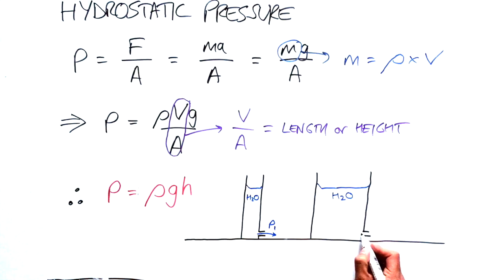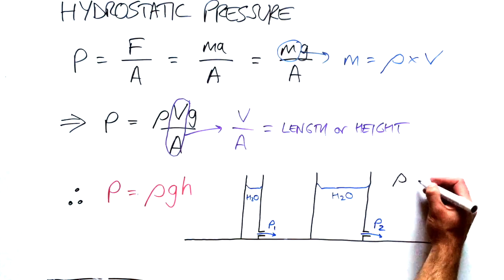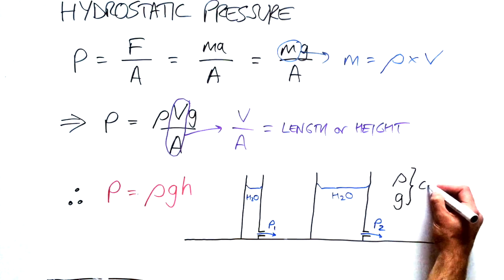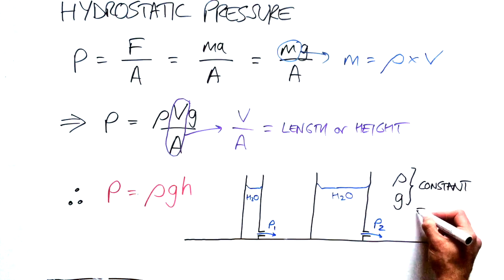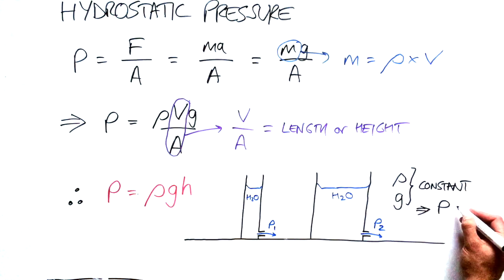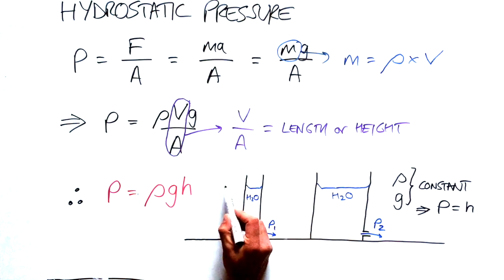As both containers contain water, the density is constant and gravity is constant. So this means that rho g is a constant. So pressure is therefore effectively equal to height. And as H1 equals H2 in this example, both P1 and P2 are equal,